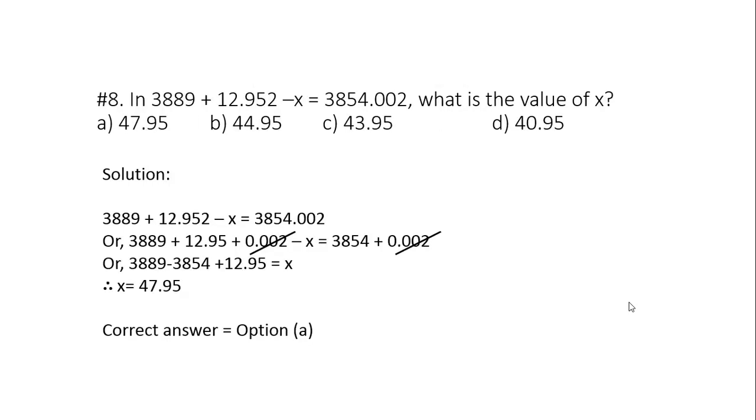Question 8: Simplification problem. In 3889 plus 12.952 minus x equals 3854.002, what is the value of x? We need to find the value of x. We will break 12.952 into two parts: 12.95 plus 0.002. And similarly, the number on the right hand side, 3854.002, is broken into two parts: 3854 plus 0.002. Cancelling 0.002 from both sides, we are left with 3889, 12.95, and 3854. Interchanging the sides, we get x as 47.95. So the correct answer is option number A.